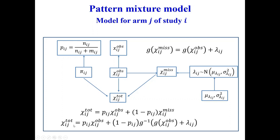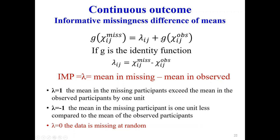When lambda equals zero, the total outcome equals the observed outcome. So lambda equals zero corresponds to the available case analysis, and it is like assuming missing at random. We suggest using that as a starting point. Be careful that lambda cannot be informed from the data, so either you resort to expert opinion or you make a sensitivity analysis.